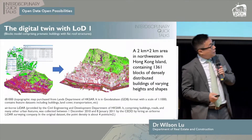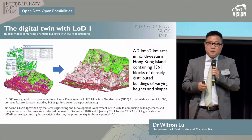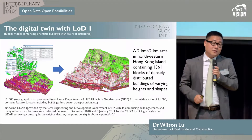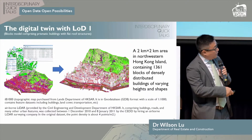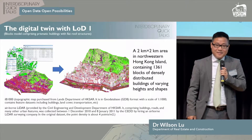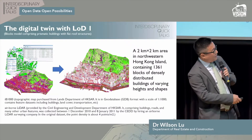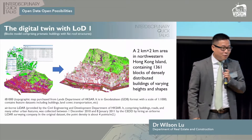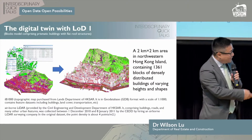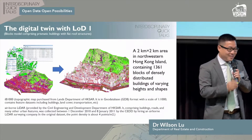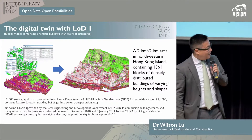We start the digital twin from level one — we have a term called Level of Detail (LOD) to define this kind of urban digital twin. We purchased data from the Lands Department; it's very good detailed data, but quite pricey. If this is the data you want, we can share it, but if not, let's organize together to bargain with the Lands Department to get the data.